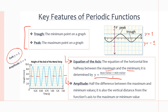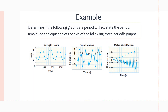The amplitude is the distance between the axis and a trough or a peak. From the axis to a peak is 4 units, and from the axis to the trough is also 4 units. So the amplitude a = 4, which is half the distance between the maximum and minimum points.